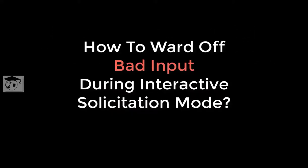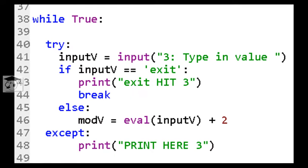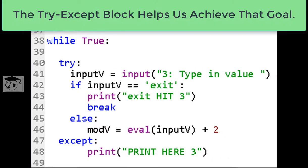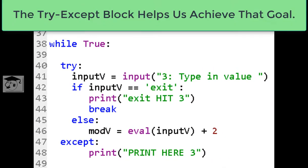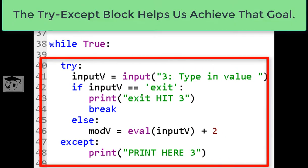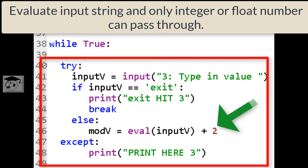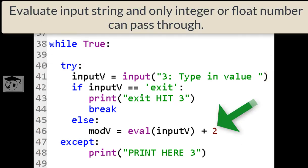How to ward off bad input during interactive solicitation mode. The try-except block helps us achieve that goal. Evaluate input string — only integer or float numbers can pass through.